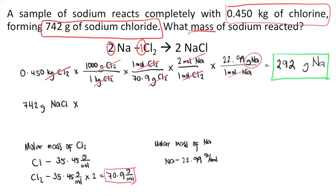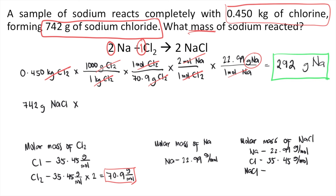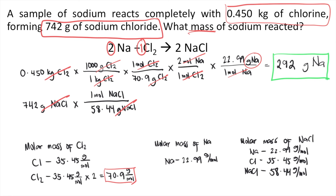First, convert grams into moles of sodium chloride. We need the molar mass of NaCl. From the periodic table, Na is 22.99 and Cl is 35.45, so the molar mass of NaCl is 22.99 + 35.45 = 58.44 grams per mole. That means one mole of NaCl is equivalent to 58.44 grams of NaCl. The grams of NaCl cancel out, and now you have moles of NaCl.